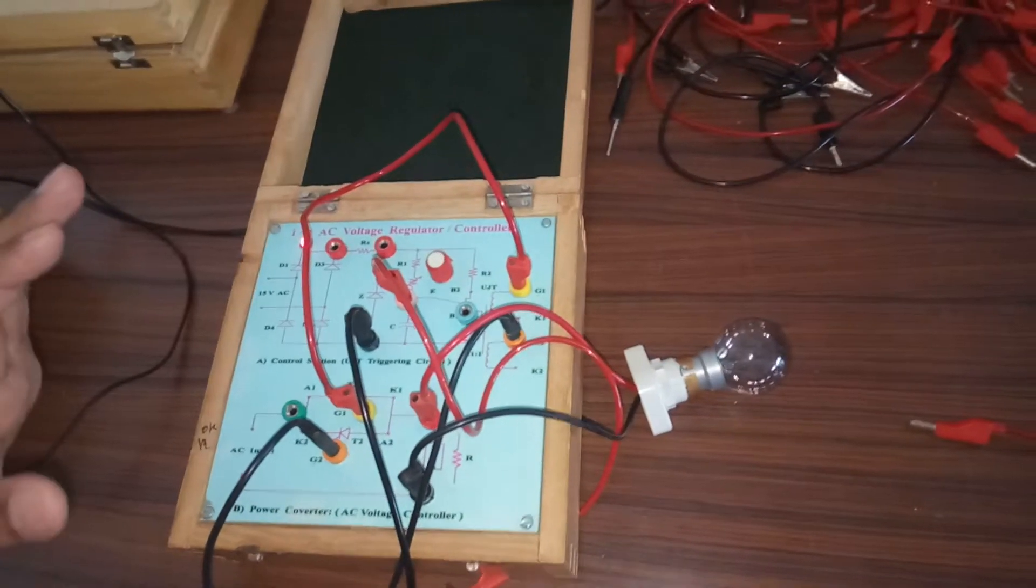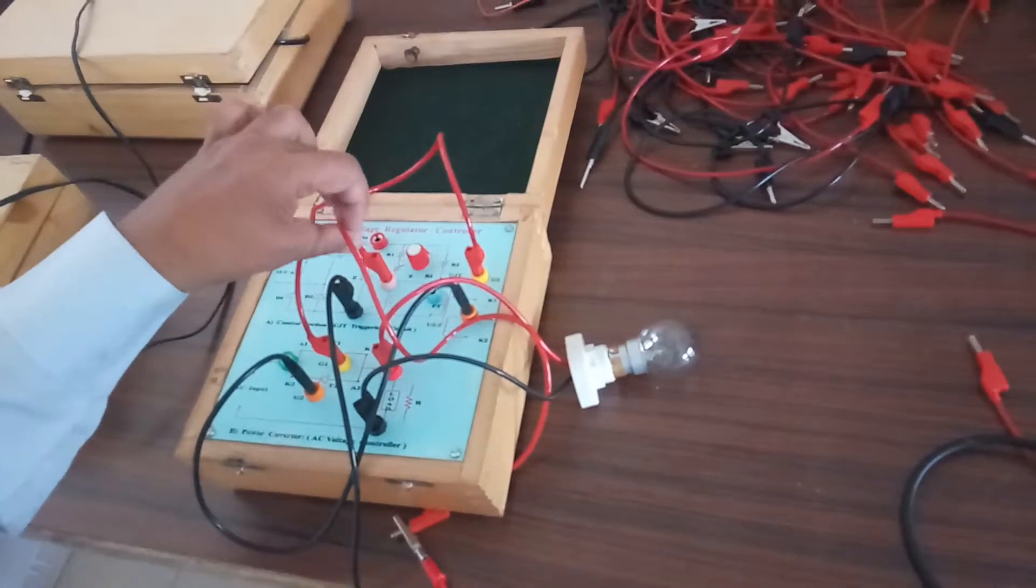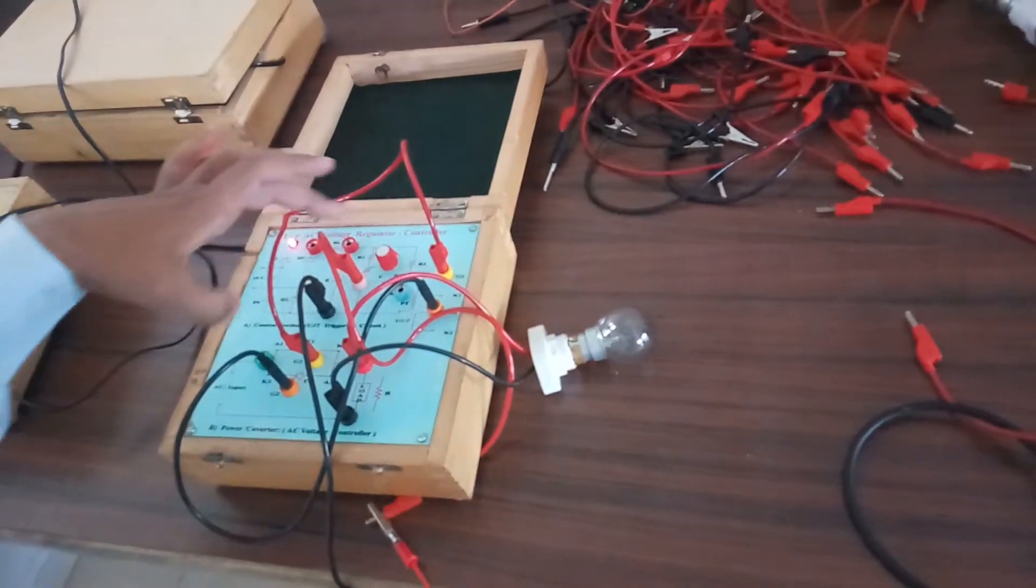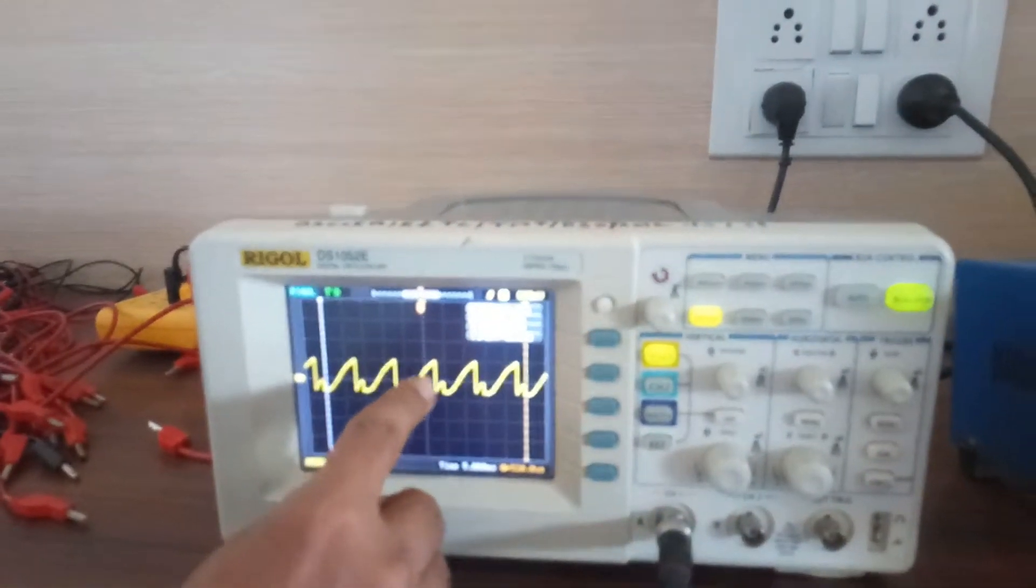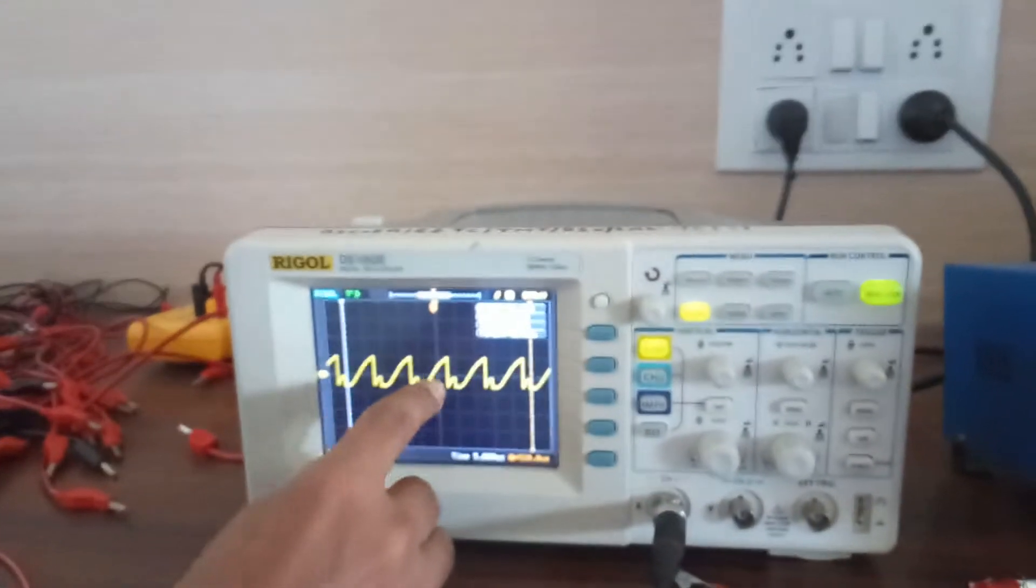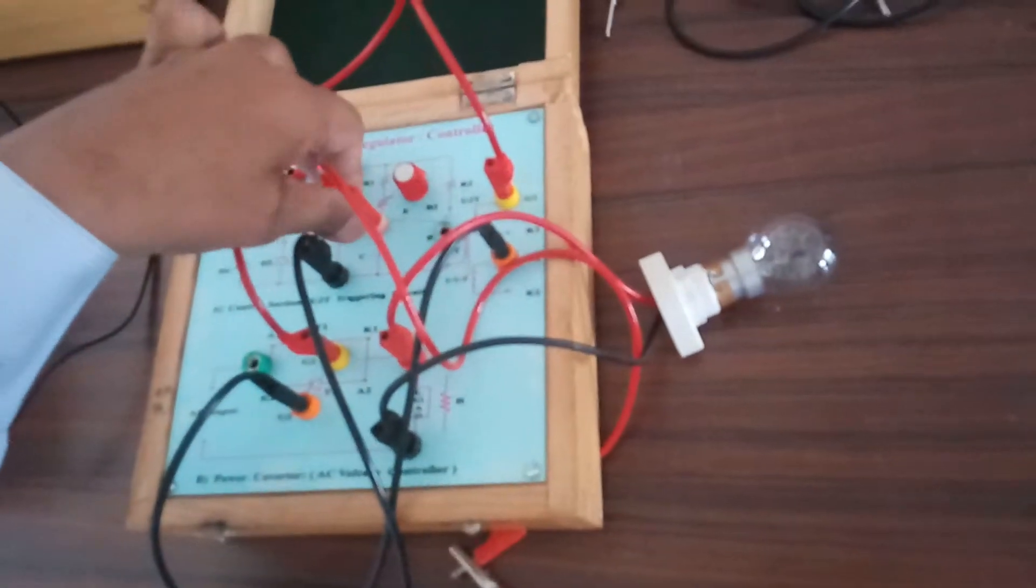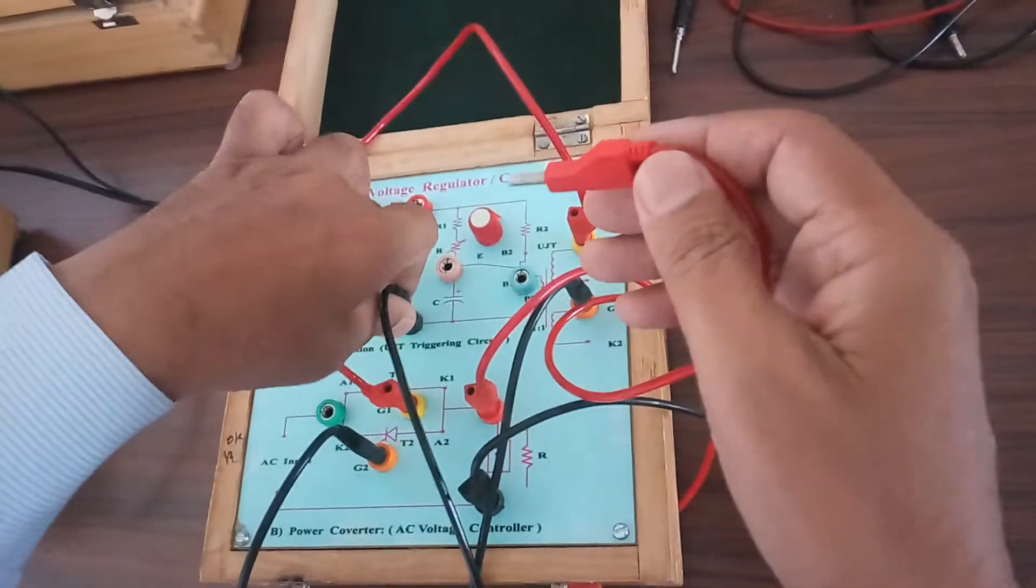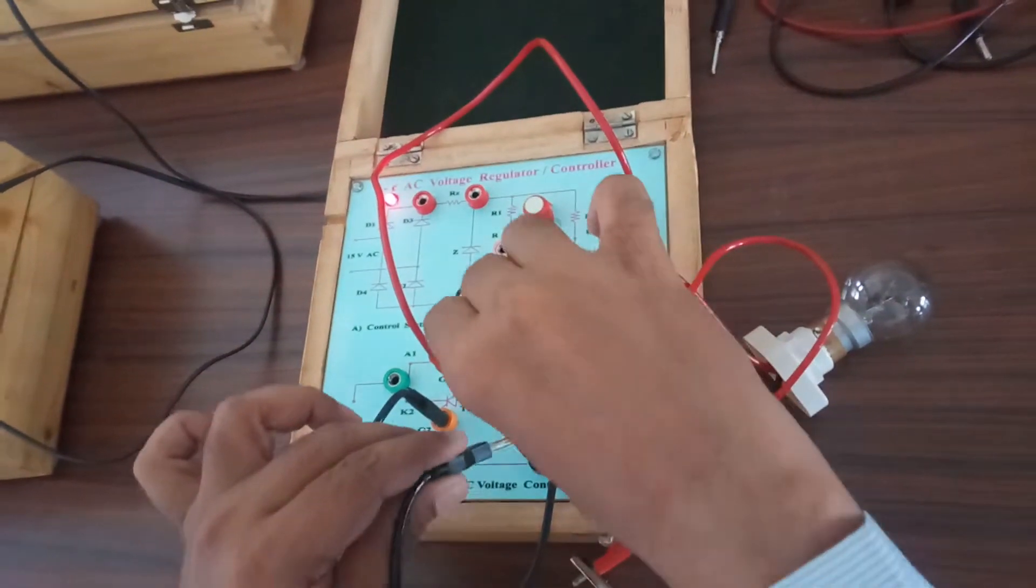Now let us observe the waveforms. Now we have connected this power scope across the capacitor. So voltage across capacitor will be observed on power scope. This is the waveform of charging and discharging. So during this discharging period, this UJT will turn on, providing the pulses across this pulse transformer. So let us observe these pulses or let us observe it directly across load.